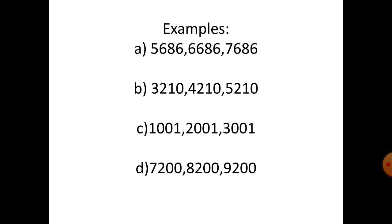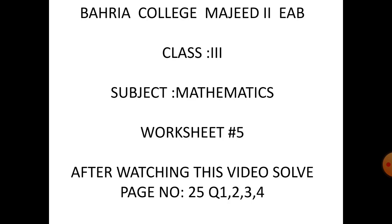Number D: seven thousand two hundred, eight thousand two hundred, nine thousand two hundred. For your homework, after watching this video, solve page number 25, questions one, two, three, and four. This is your worksheet number five.